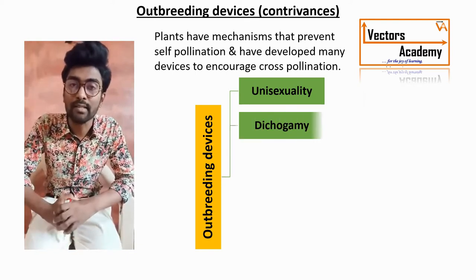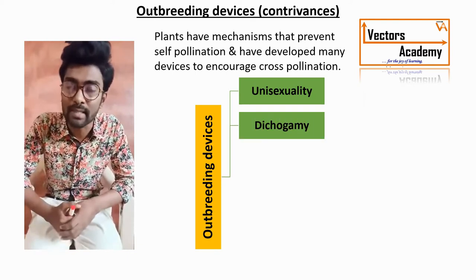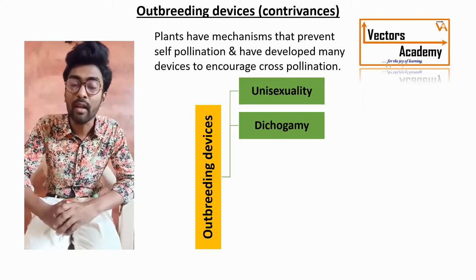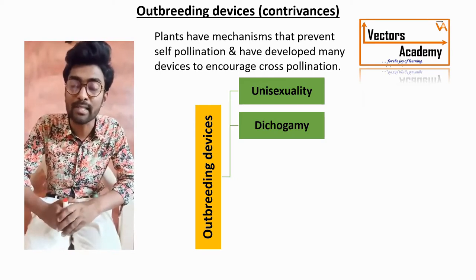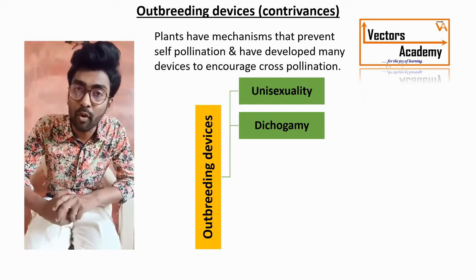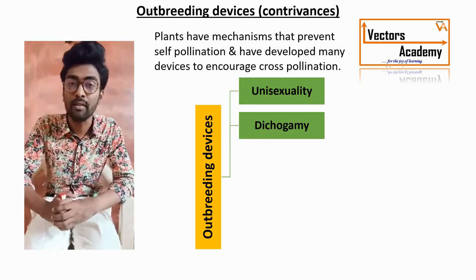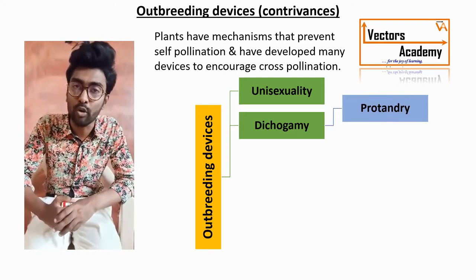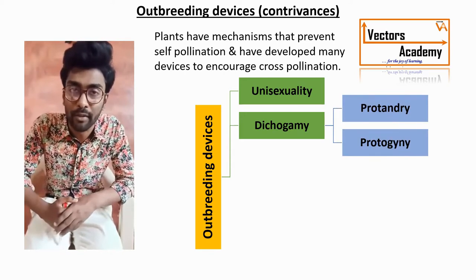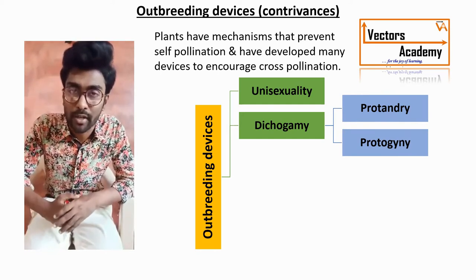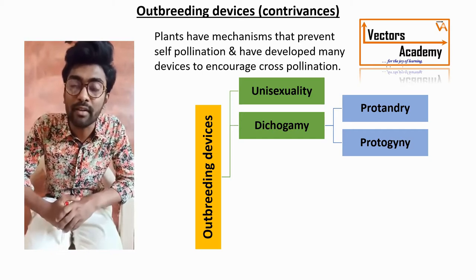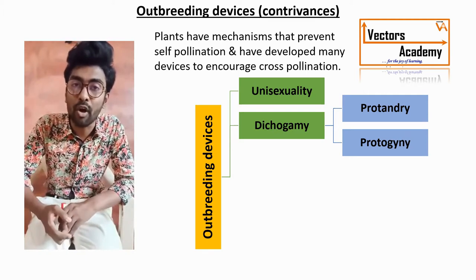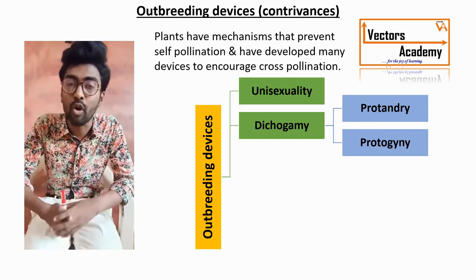The second outbreeding device is dichogamy. 'Di' stands for two and 'gamy' stands for marriage. Dichogamy is a type of device where the maturation of the anther and the stigma takes place at two different times — that is, the maturation of the androecium and the gynoecium takes place at two different times. Dichogamy is of two types: the first is called protandry and the second is called protogyny.